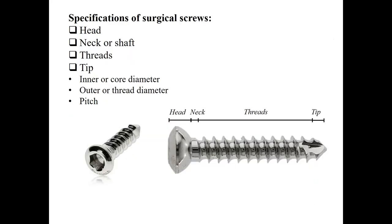The screw includes four parts: head, neck, threads, and tip. The head provides the connection for the screwdriver and prevents the screw from advancing into the material. The interface between the screwdriver and the head is usually hexagonal. The undersurface of the head is usually hemispherical to increase the surface area for load transfer.